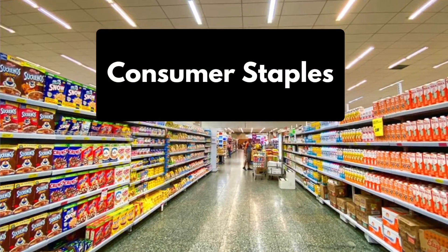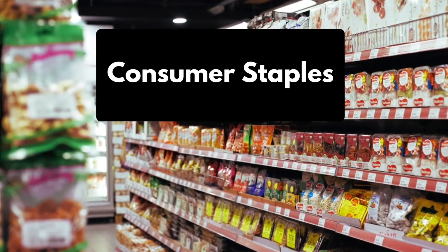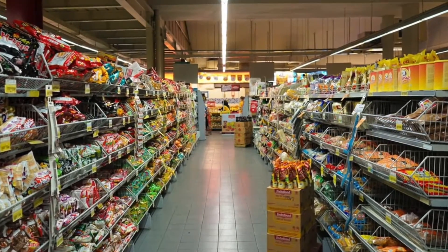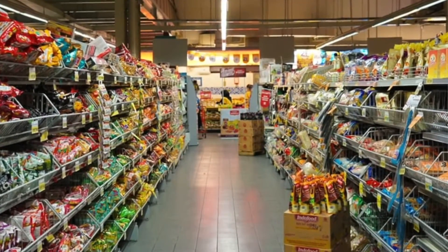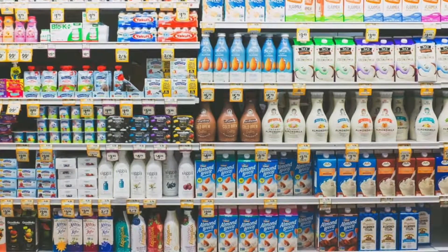Now let's delve deeper into the 11 sectors. Number one: consumer staples. This sector consists of products consumers use on an everyday basis — even in an economic downturn, people keep using them since they're always in demand. They include beverages, food products, household products, personal products, and tobacco. Examples include Procter & Gamble, Kimberly-Clark, Estee Lauder, Pepsi, and Coca-Cola. I have consumer staples at 20% because these companies have a competitive advantage — they perform well in downturns, keep paying dividends, and grow their dividend every single year.